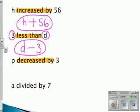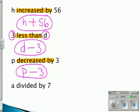In the third one, we have decreased by, which also means subtract, but this time there's no then. So the p goes before the subtraction sign, and the 3 goes after the subtraction sign.